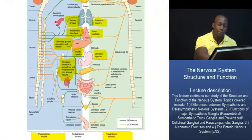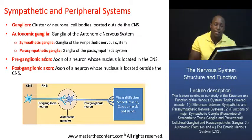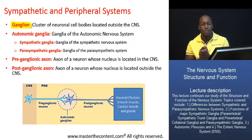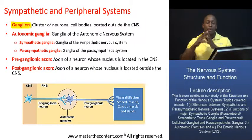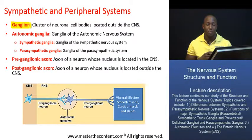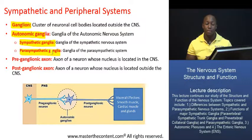What we're going to do next is define a few important terms. A ganglion is basically a cluster or aggregation of neuronal cell bodies located outside the central nervous system — just a grouping of neuron cell bodies outside the CNS. That's the key feature. Autonomic ganglia are ganglia of the autonomic system. Sympathetic ganglia are ganglia of the sympathetic nervous system, and similarly, parasympathetic ganglia are ganglia of the parasympathetic system.